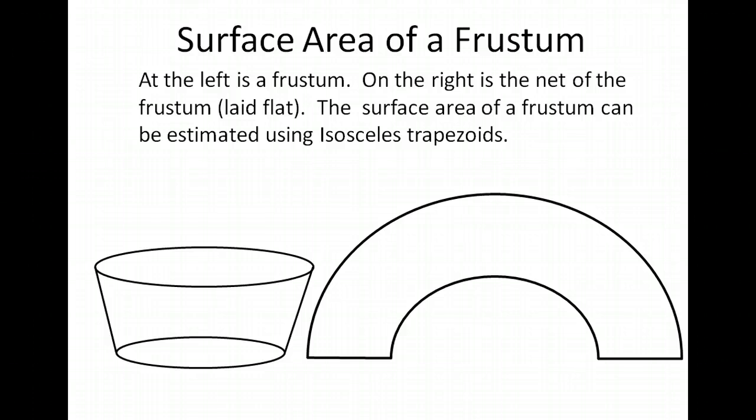What we're going to be doing in this lesson is trying to find a formula for the surface area of the frustum. And we can do that by using isosceles trapezoids.